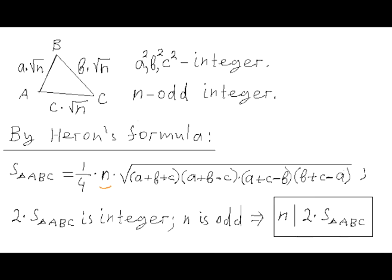Denote the side lengths of three sides of the triangle by a times square root of n, b times square root of n, and c times square root of n. Since it's given that the squares of all side lengths are divisible by the same odd integer number n, a, b, and c in these formulas are either integer numbers or square roots of integer numbers multiplied by square root of n.